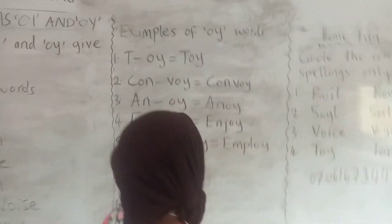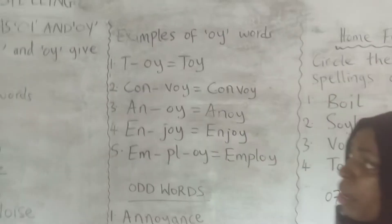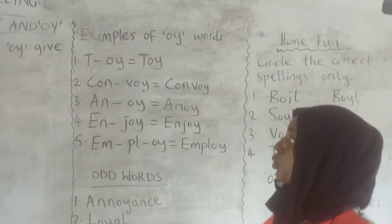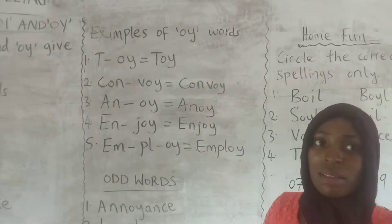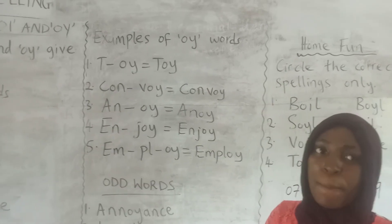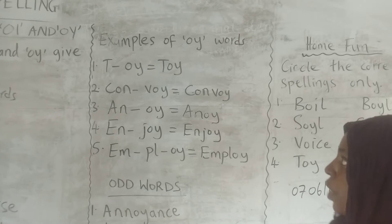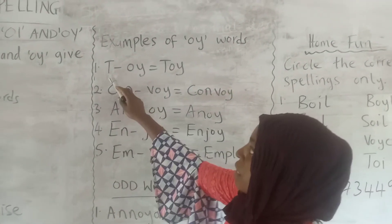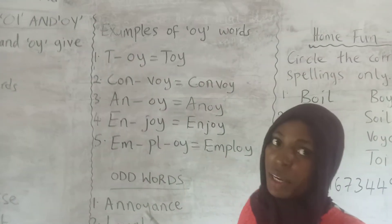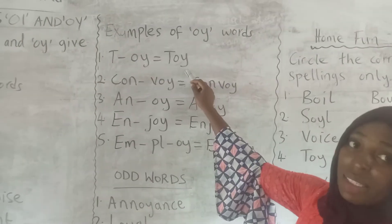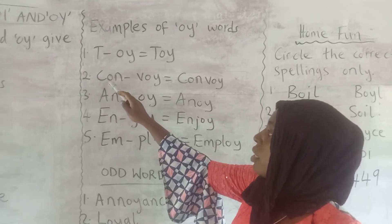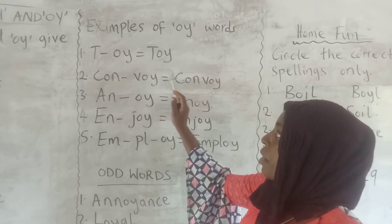Let's go to O-Y words. You're going to notice something different here. Though O-I and O-Y give the same sound, O-Y is usually used when the O-I sound appears at the end of words. Here we have T-O-Y: toy. That's why the O-I sound is at the end, so we use O-Y to spell it.